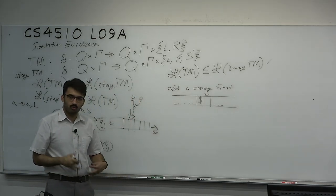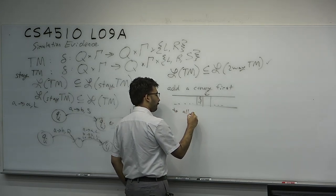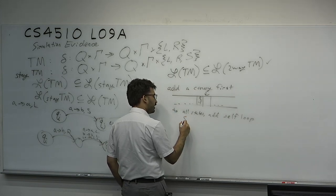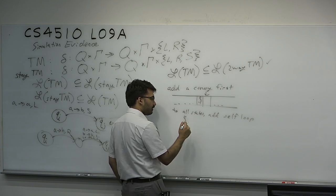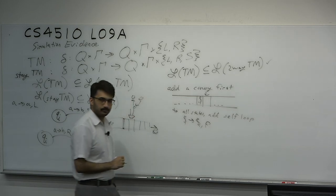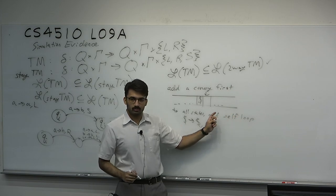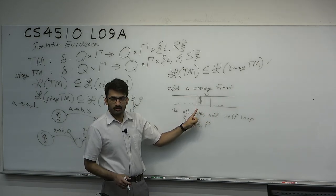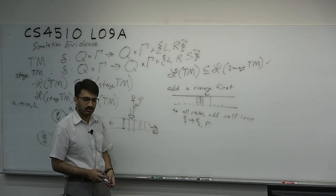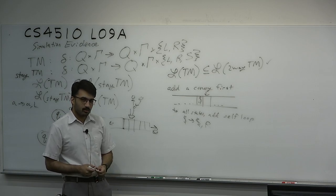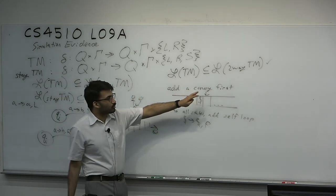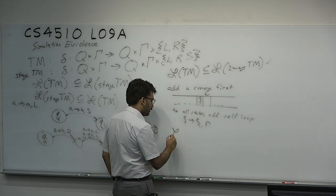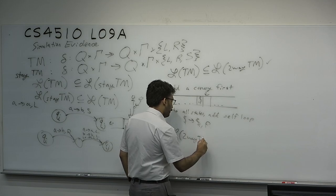If the Turing machine is poorly programmed and tries to move leftward too many times, it reads the canary and we force it back to the right — that correctly simulates the original behavior. Now let's think about the harder direction. We've shown that the two-way Turing machine is at least as powerful as the Turing machine. But is it strictly more powerful? We don't think so. What we're going to prove is that any language recognizable by a two-way Turing machine is also recognizable by a one-way Turing machine.